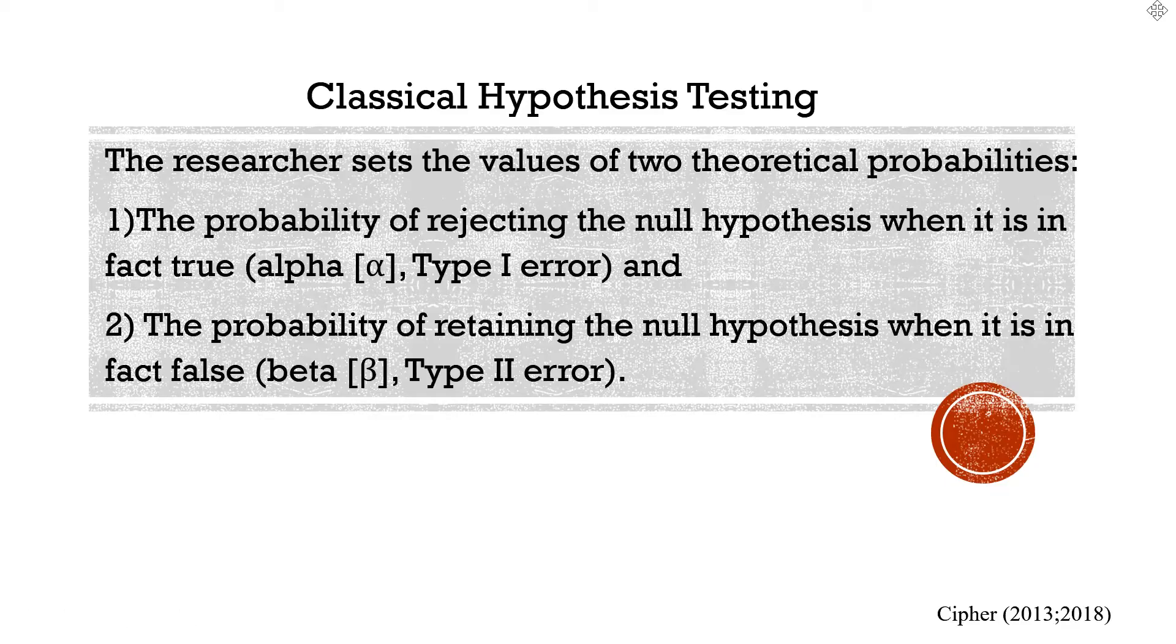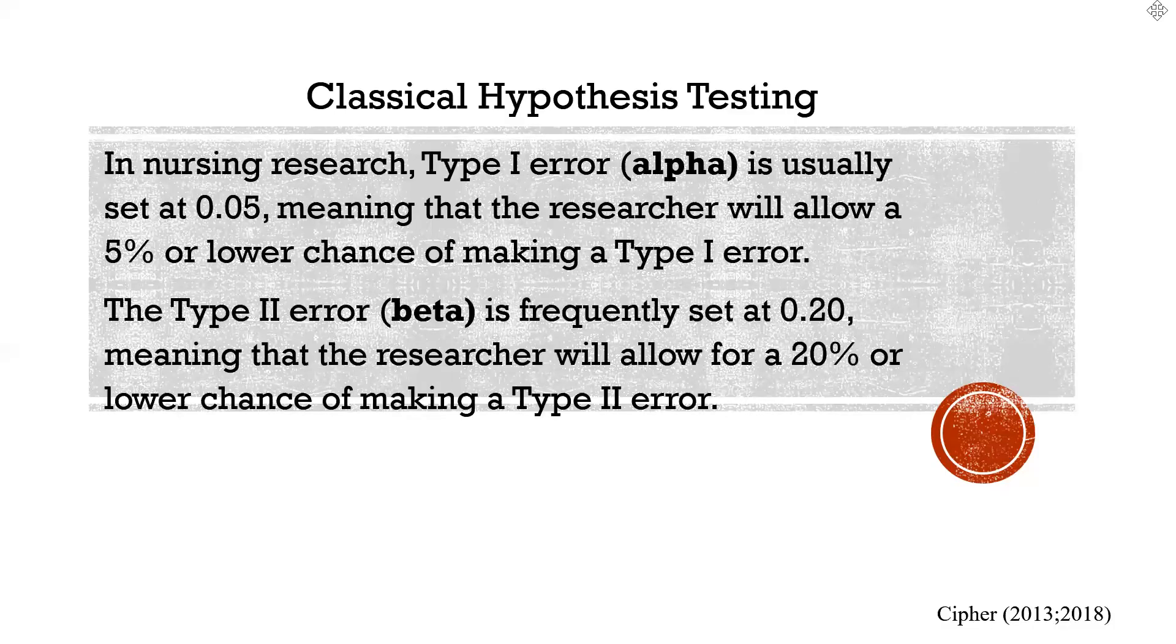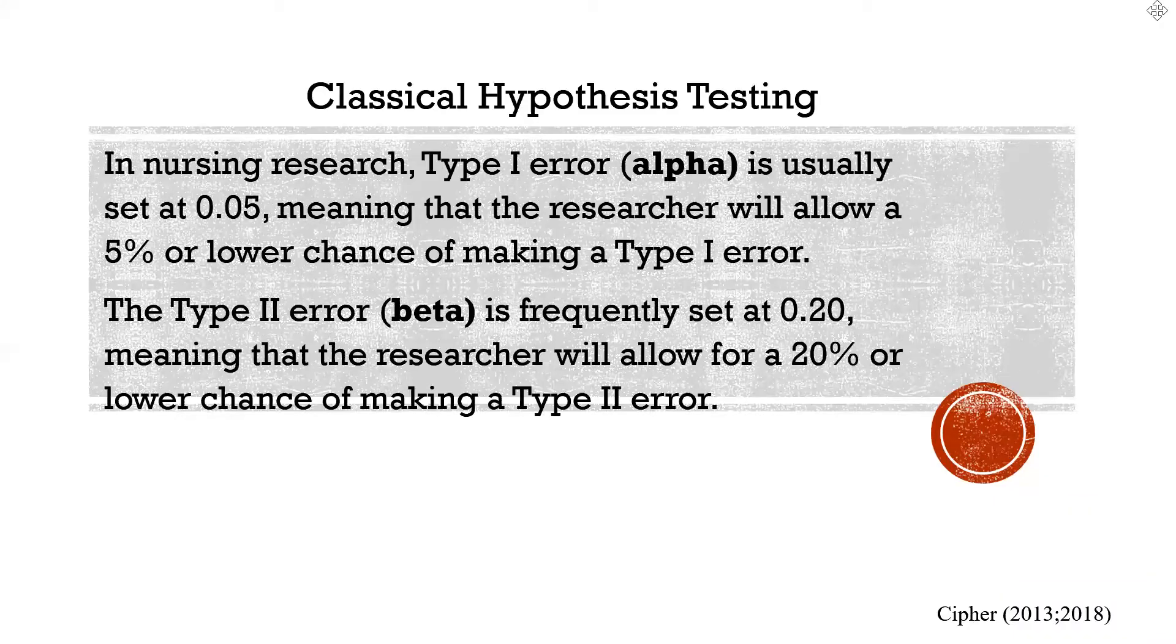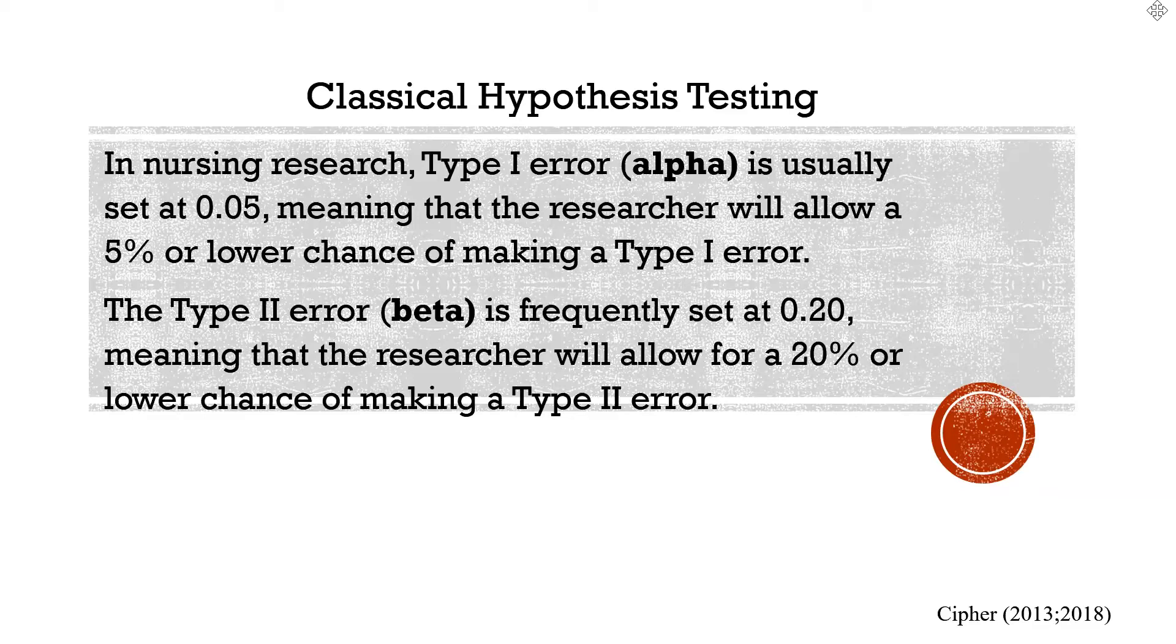But, in any case, we try to keep both of these errors very low. So, in nursing research and healthcare research, generally, we set type 1 error, abbreviated as alpha here, usually to 0.05, meaning that we're comfortable with a 0.05 or 5% or less chance of making a type 1 error.